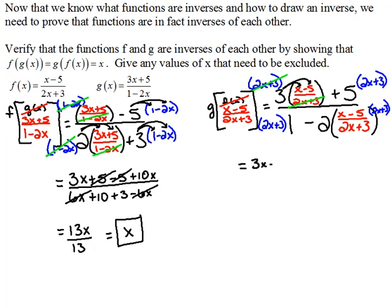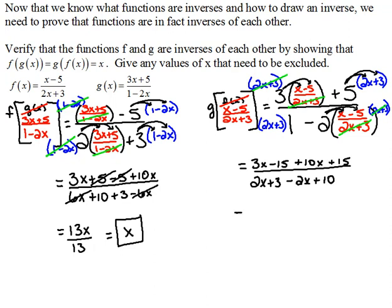And we're left with that distribution: 3x − 15. Over here we have to distribute as well, so that would be plus 10x + 15. On the bottom, 2x + 3 times 1 is 2x + 3. For the second term, the denominator cancels and when we distribute we get minus 2x + 10. Now we clean this up, and this turns out to be 13x over 13, which is x.